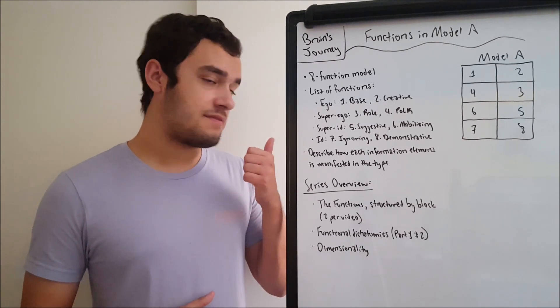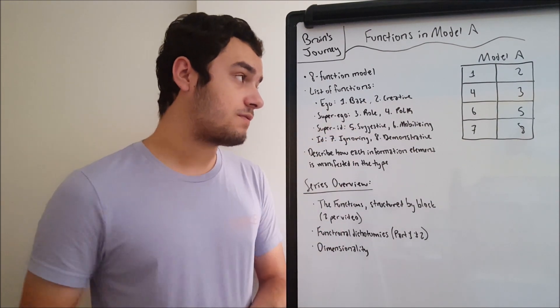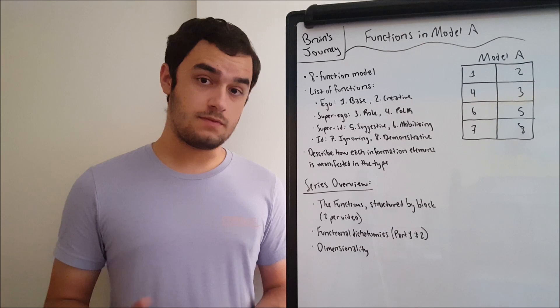For the first block, we have the ego block, which is basically the control center of the personality. We have the base function, the first function, and the second function, the creative function.